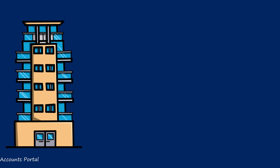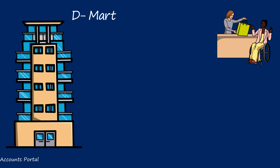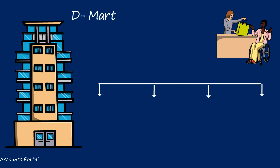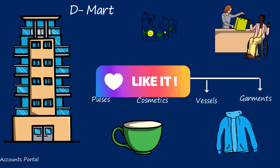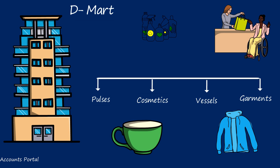Growing mall culture is found in cities, towns, and even villages — we find new malls cropping up everywhere. Big departmental stores like D-Mart are the best example. Till today there are approximately 284 D-Mart stores in India. This organization has four departments: ground floor — pulses, first floor — cosmetics, second floor — household vessels, third floor — garments.